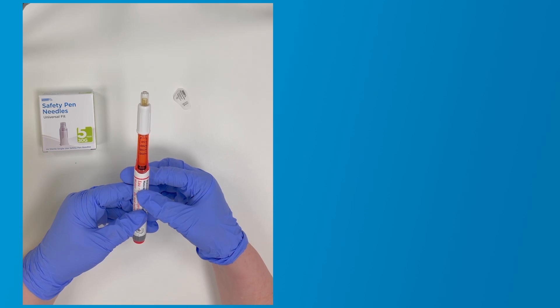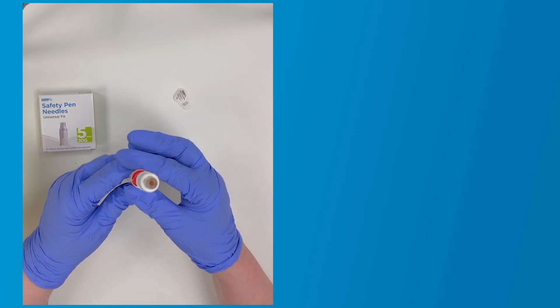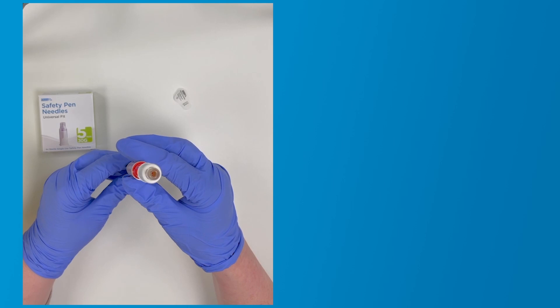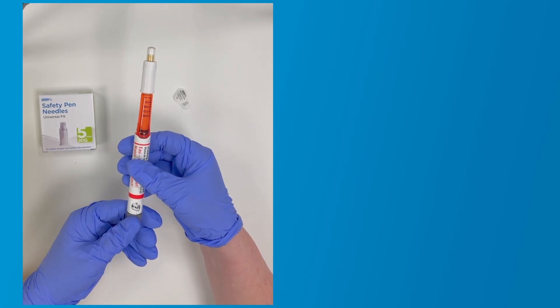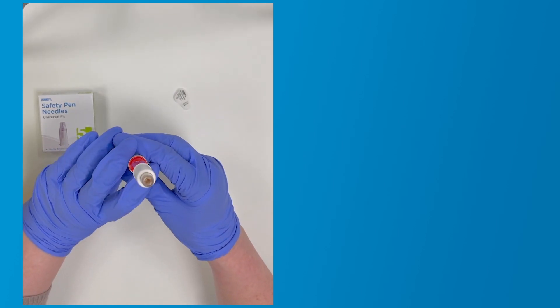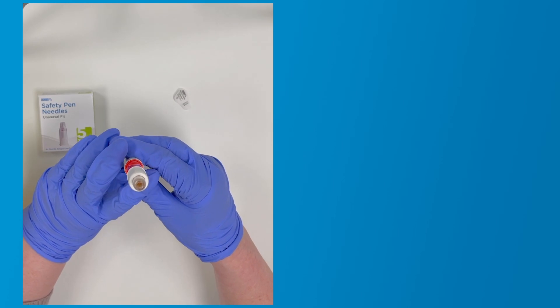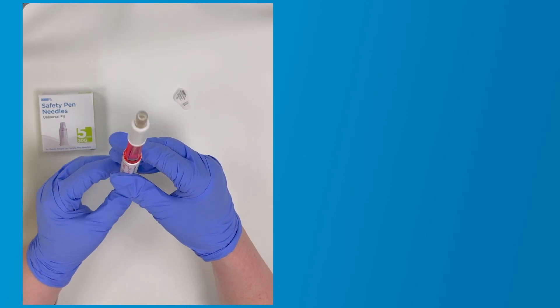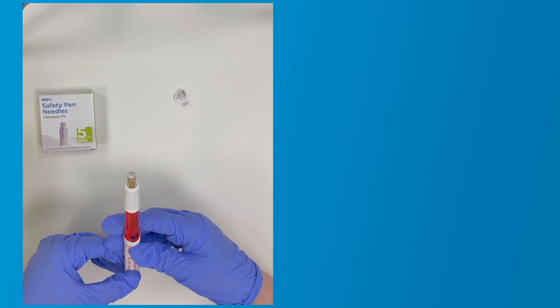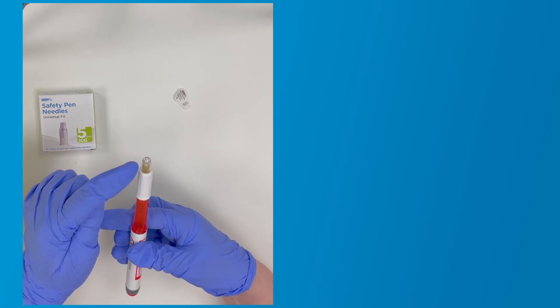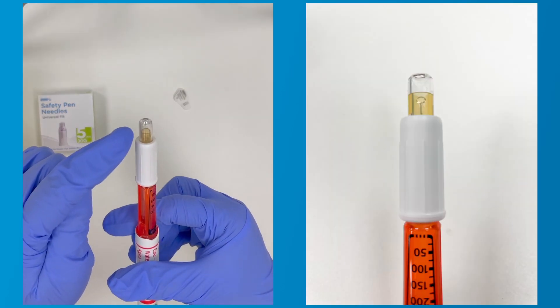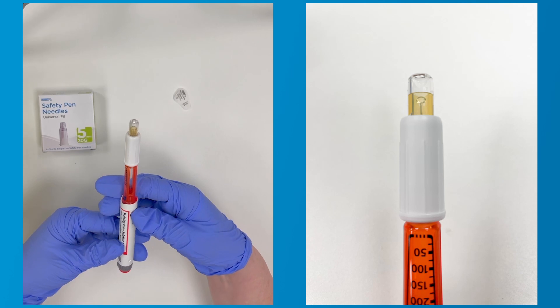Next, ensure the insulin pen is in an upright position and check the needle flow by expelling two units of insulin, also known as an air shot. A small amount of insulin may appear in the clear capsule as a result. This is normal. If you do not see any insulin leave the tip of the needle, please repeat the air shot process.